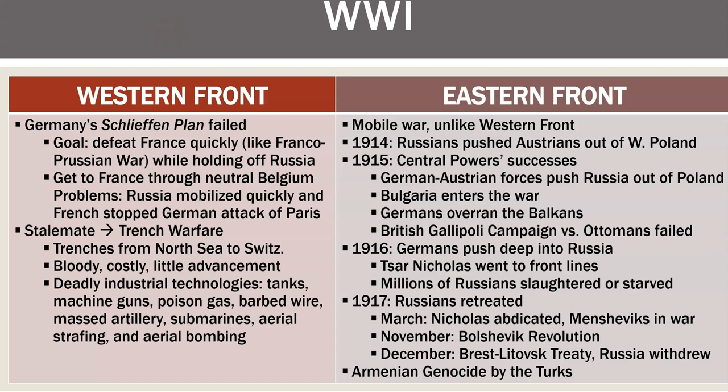The Schlieffen Plan failed. It was a plan by the Elder von Moltke to defeat France in six weeks and then turn and face the Russians. It failed because when the German army went through Belgium and Luxembourg, the Belgians fought back. The Germans reacted angrily against the Belgians, which caused England to honor its previous commitments to Belgium and enter the war on the side of the Entente.